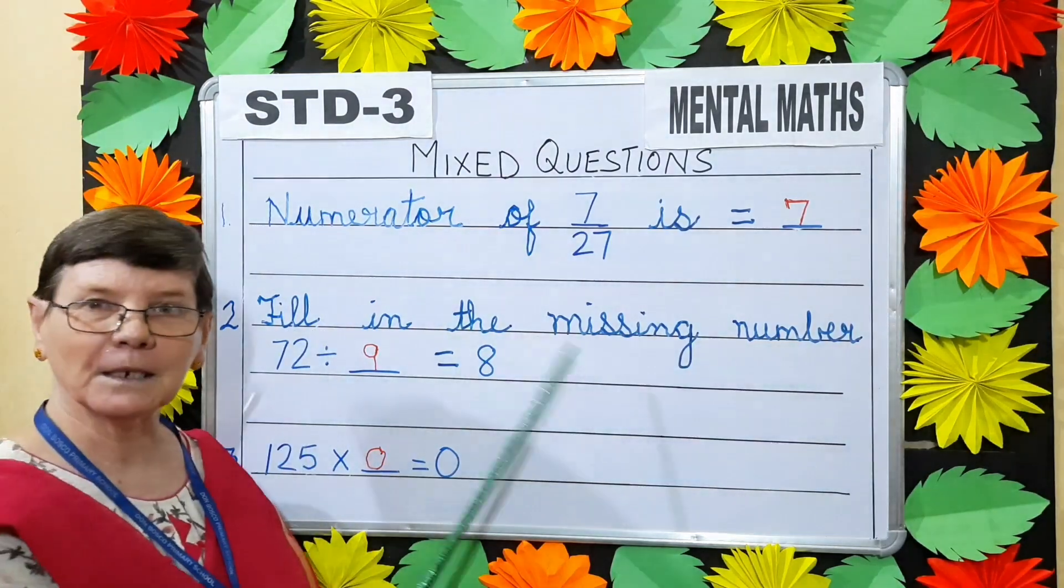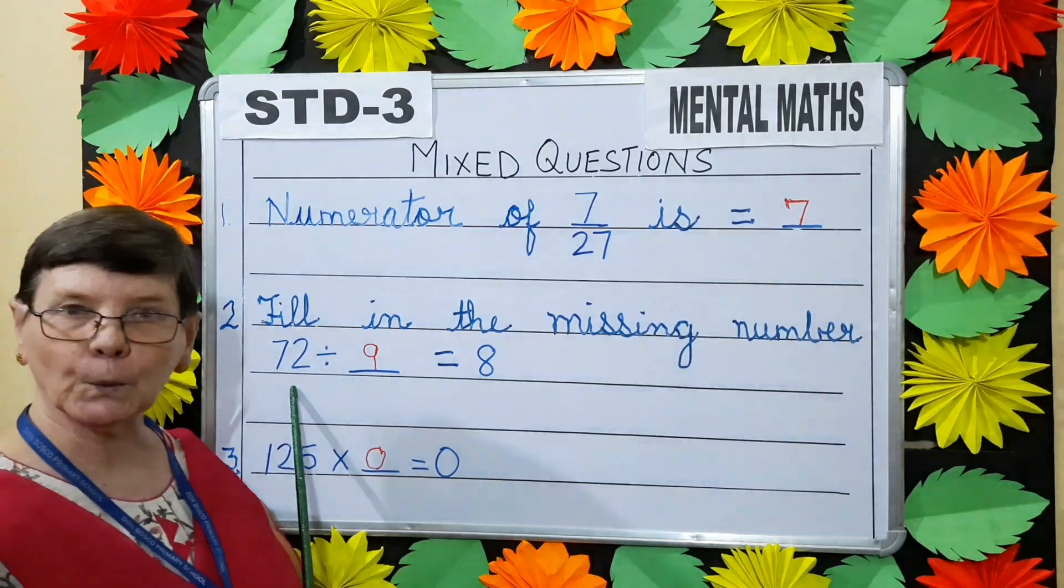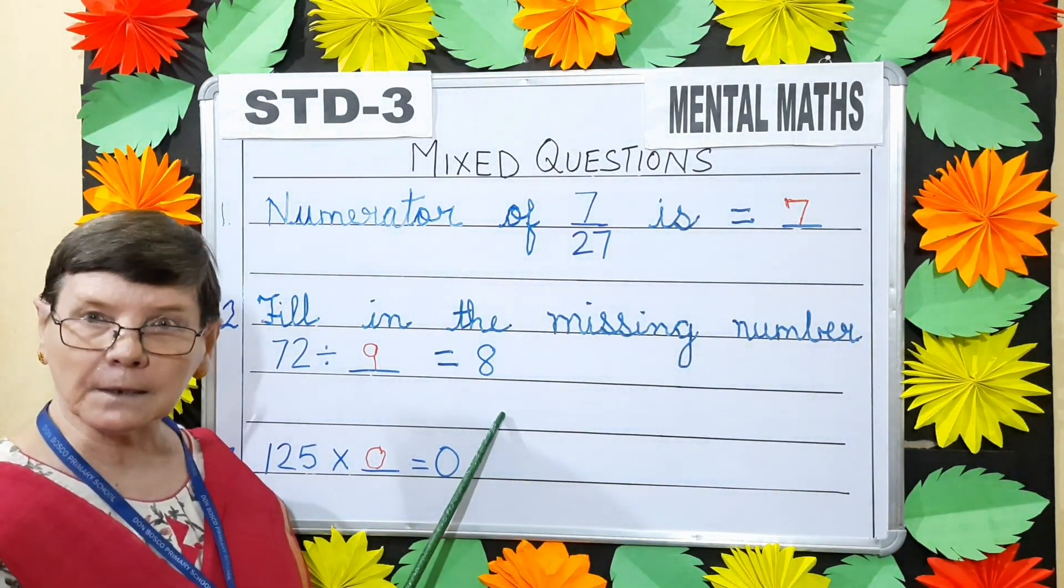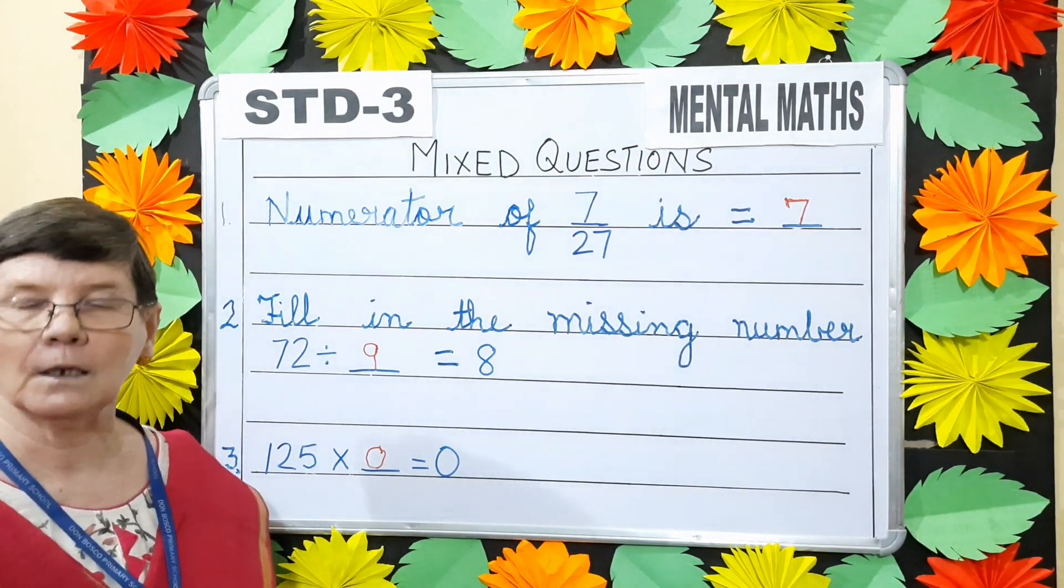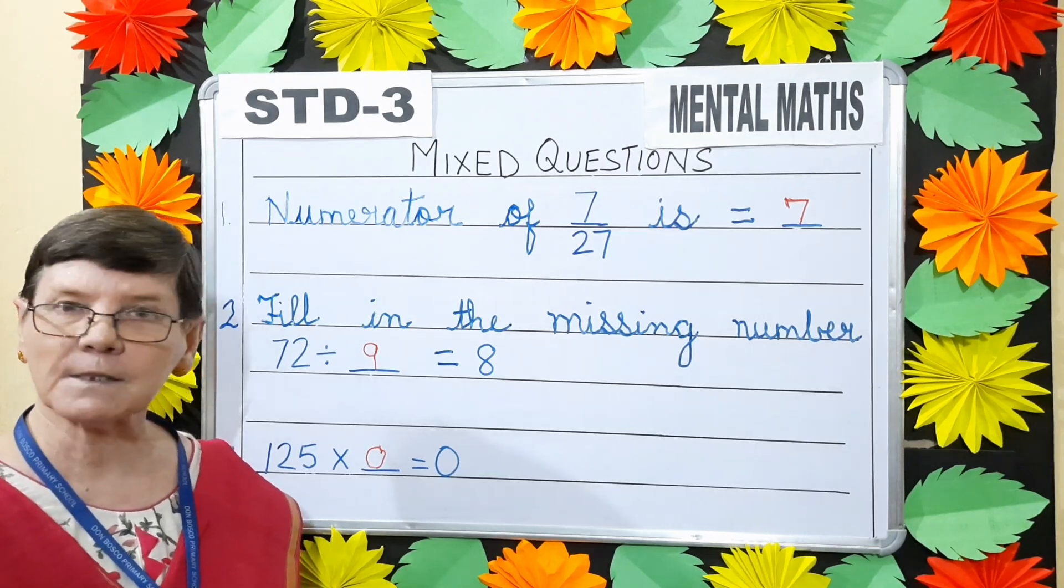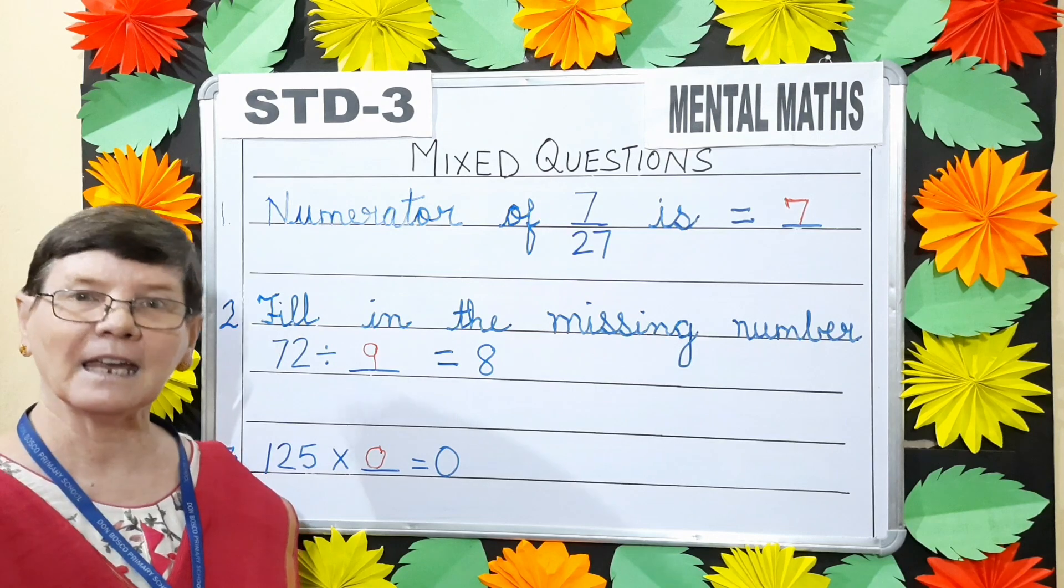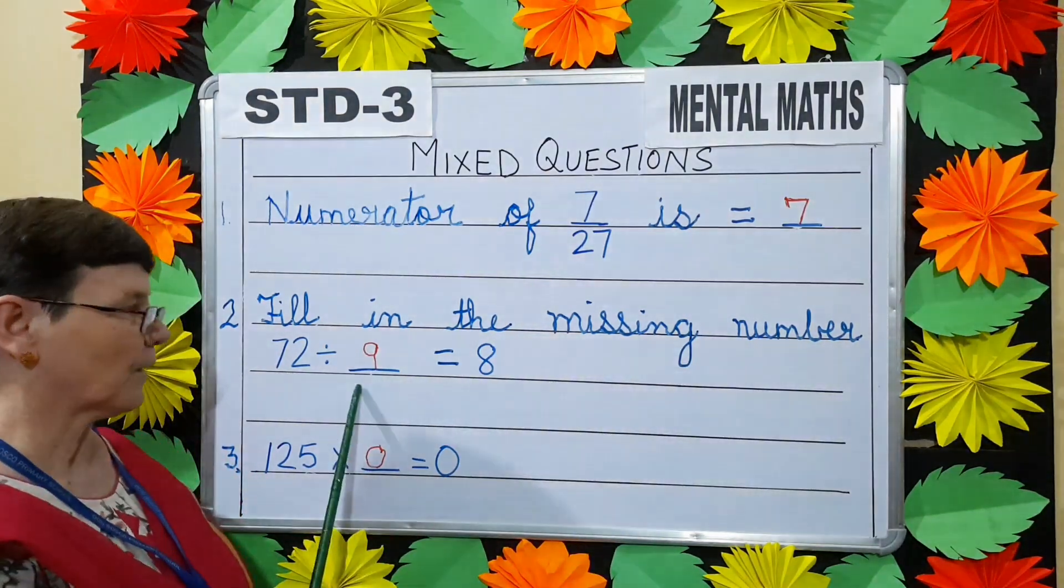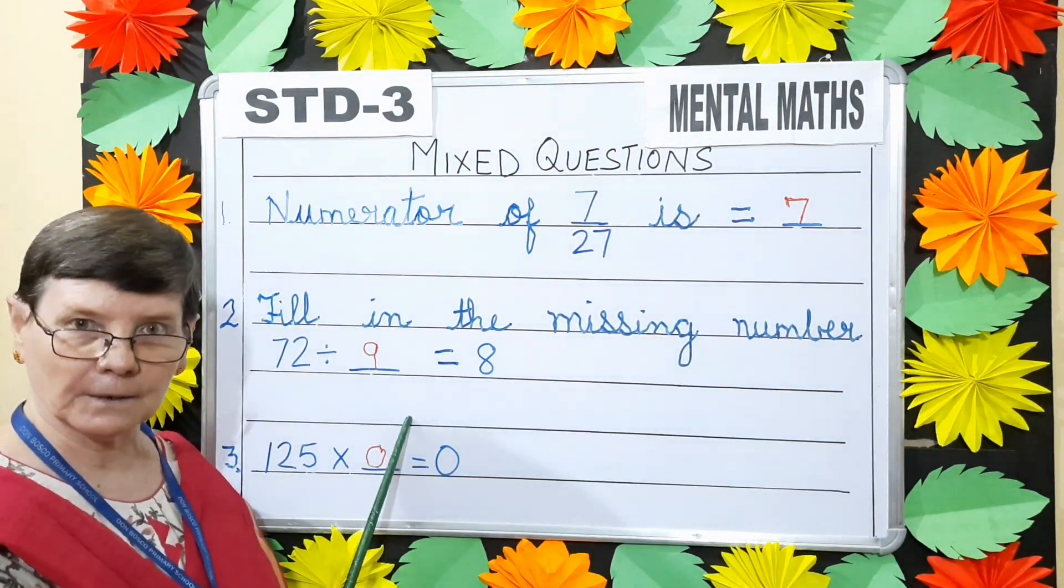Next, fill in the missing number. 72 divided by dash is equals to 8. Here you have to find the divisor. Now to find the divisor, you say your 8 times table till you come to 72. Yes, 8 9's are 72. So we write 9. 9 is the divisor here.